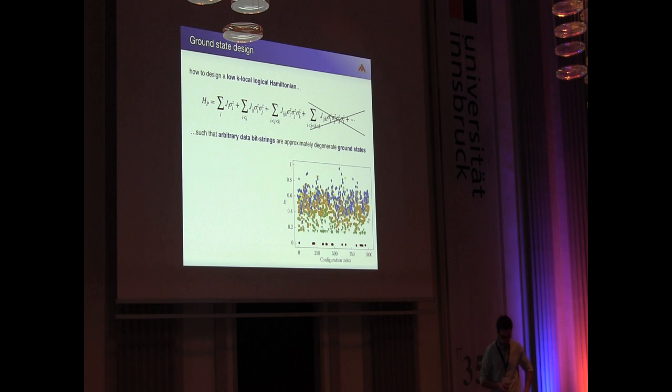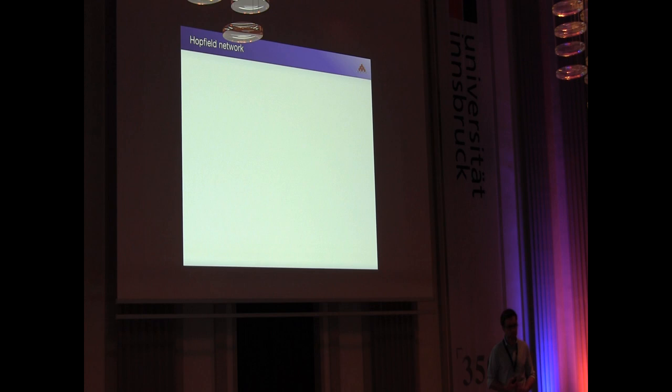Here I plotted an example for a spectrum we want to have. Here is a 10-spin system where 20 arbitrary configurations are encoded in the ground state. So with this figure, it also becomes immediately clear what is our figure of merit we want to optimize in the end, and that is this delta here, which is the energy bandwidth of the stored patterns over the separation to the pile.